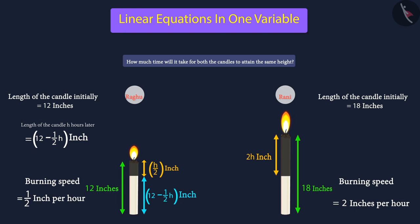Since the initial length of Rani's candle is 18 inches, therefore, the length of Rani's candle after h hours will be 18 inch minus two h inch.